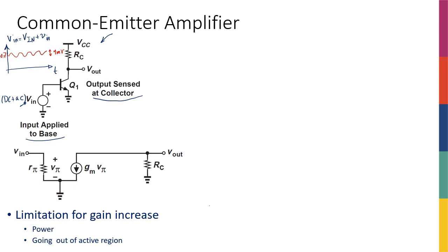The first step is drawing the small signal model. When I draw the small signal model, this Vin is now only the small signal part — just the sinusoidal component. So this is the small vin, shown as a sinusoidal source.